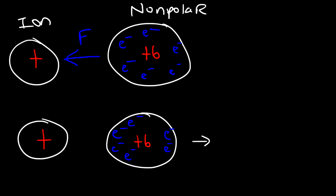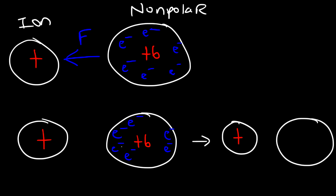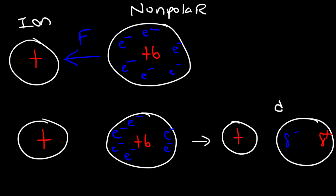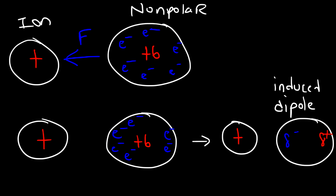So now what we have is an induced dipole. The ion is relatively the same, but the atom on the right has been polarized. The left side has more electrons, so it's going to have a partial negative charge. The right side has fewer electrons — it's electron deficient — so it's going to be partially positive. By placing this ion next to this nonpolar molecule, we caused it to become a dipole. A dipole is an object that has two regions of charge — one negative, one positive — all within the same object. So that object is polarized. We created this dipole; we induced it. So this is an induced dipole, created by the positive charge.